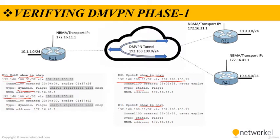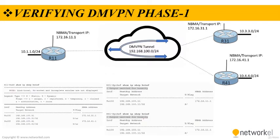This screen provides the output for the 'show ip nhrp brief' command. Some information such as the used and next-hop NHRP message flags are not shown with the brief keyword.